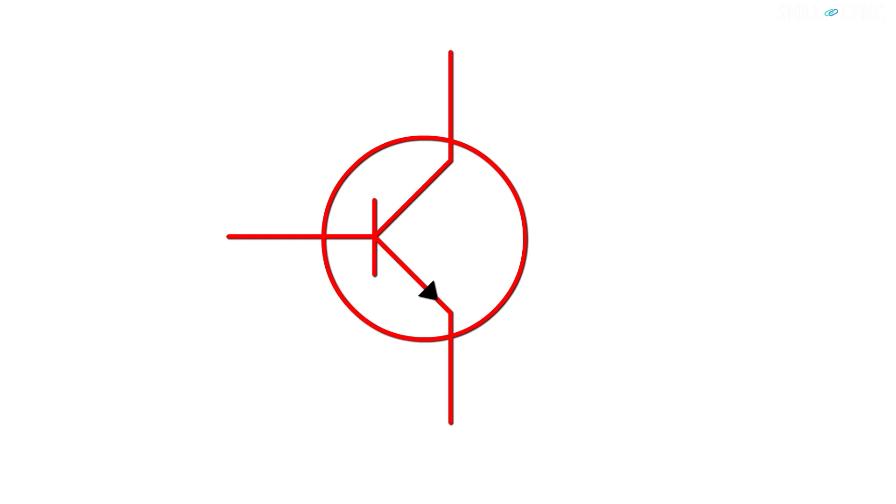A transistor consists of three terminals, namely the base, emitter and the collector. The collector and the emitter acts as the input and output terminals, whereas the base acts as the controller. In brief, the current flow between the collector and emitter is possible only when there is a current flow in the base.